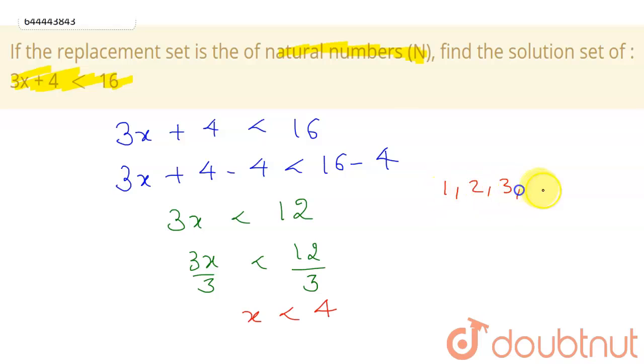And what are natural numbers? Natural numbers are 1, 2, 3, 4, 5, and so on. But this inequality says that x should be less than 4. So what will be our answer? These three terms—these three natural numbers are less than 4.